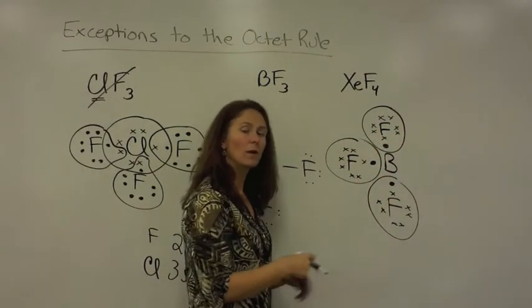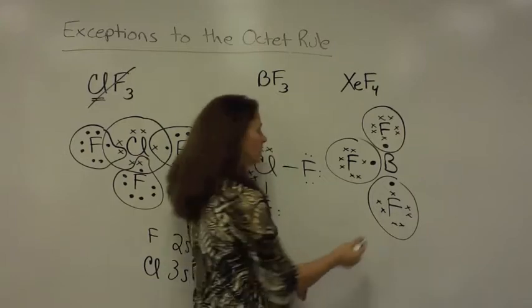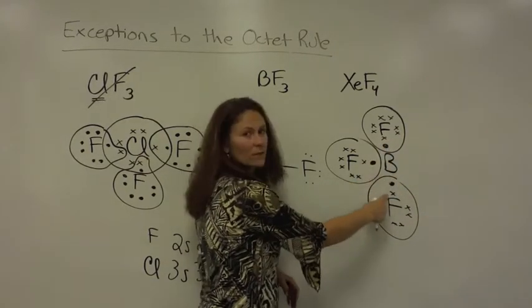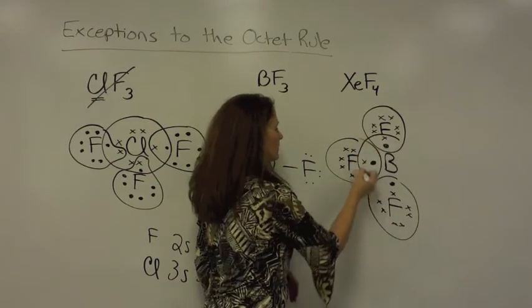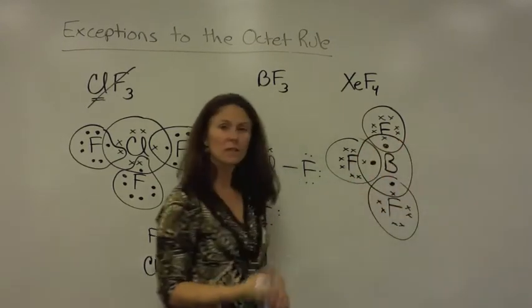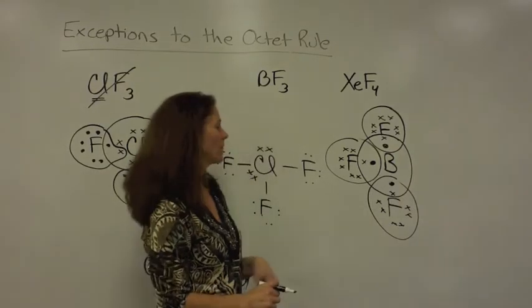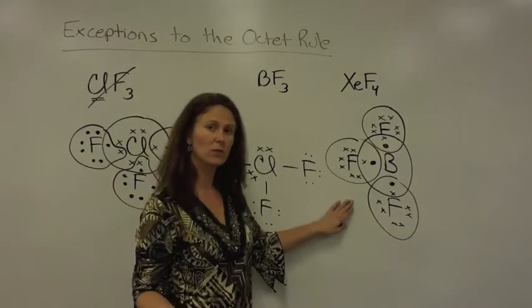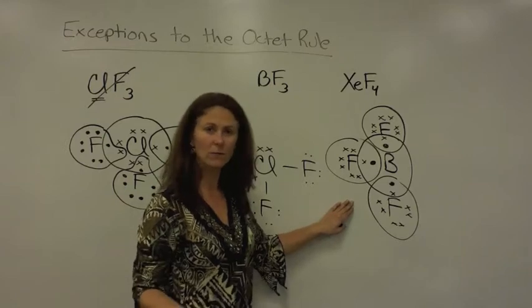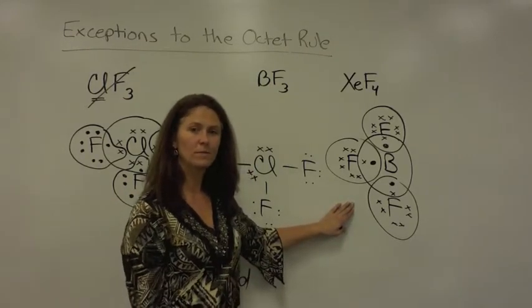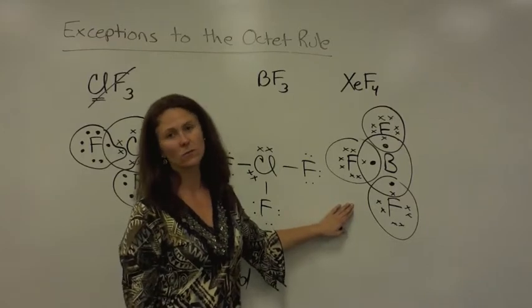So in each case, if you borrow one, you need to donate one back. Fluorine ends up with one, two, three, four, five, six. It's only six electrons. It's less than an octet, but it is an exception to the general rule. And this compound does form and it's generally very reactive because it does try to achieve that full octet by gaining two electrons from someone else.